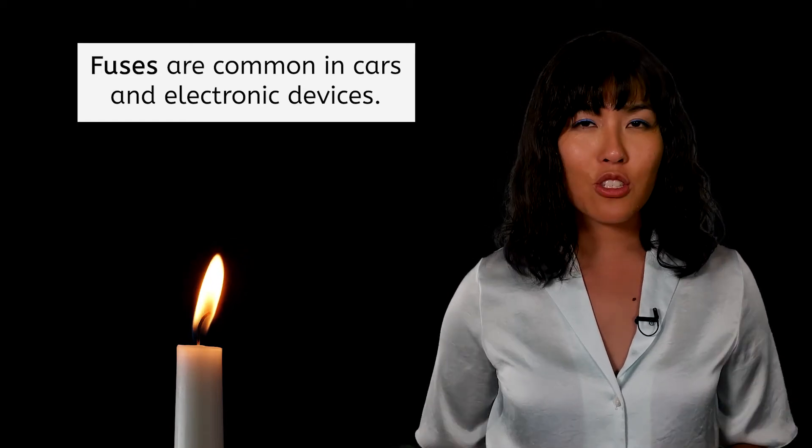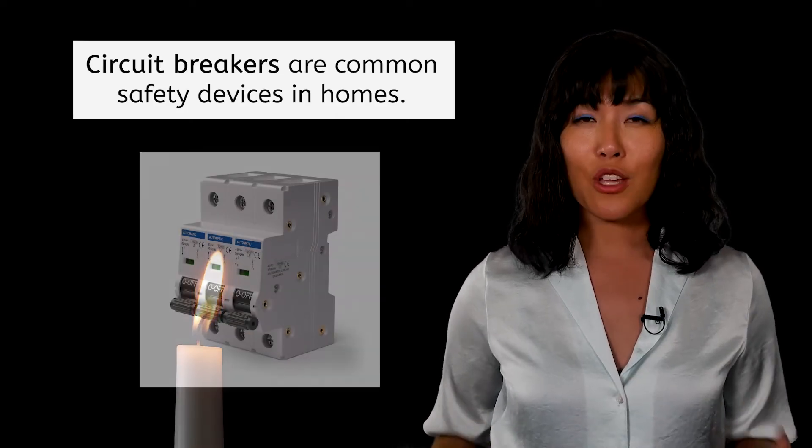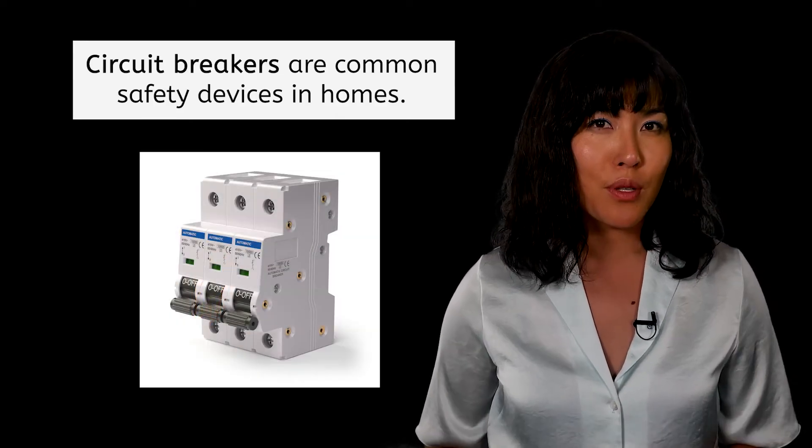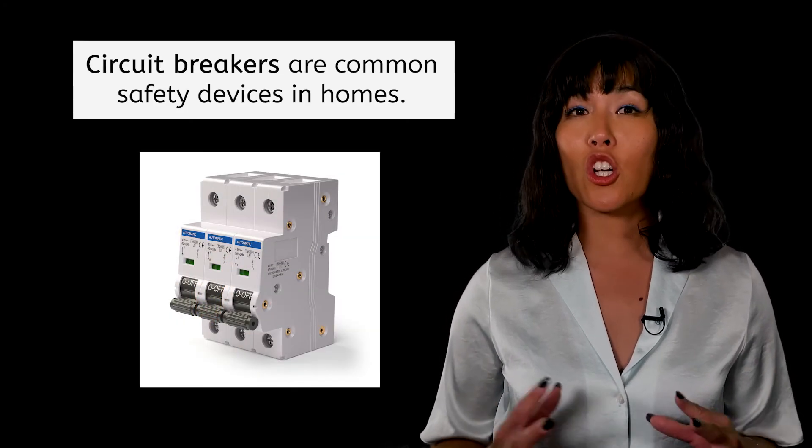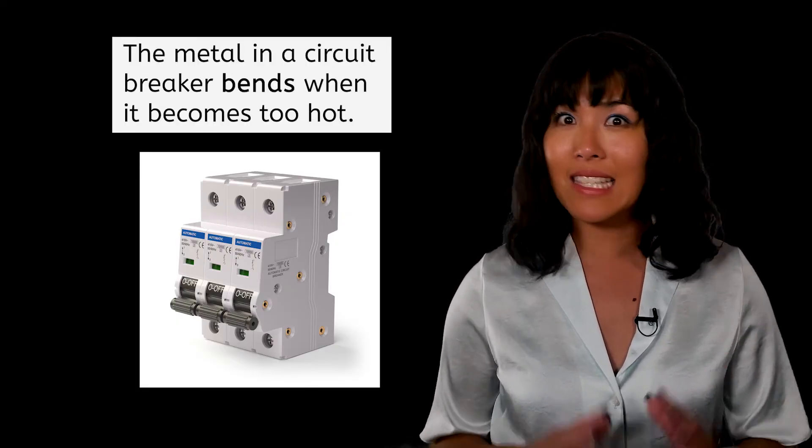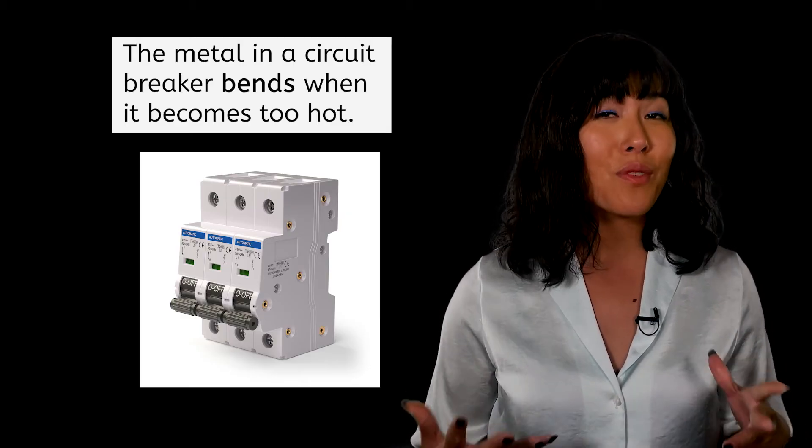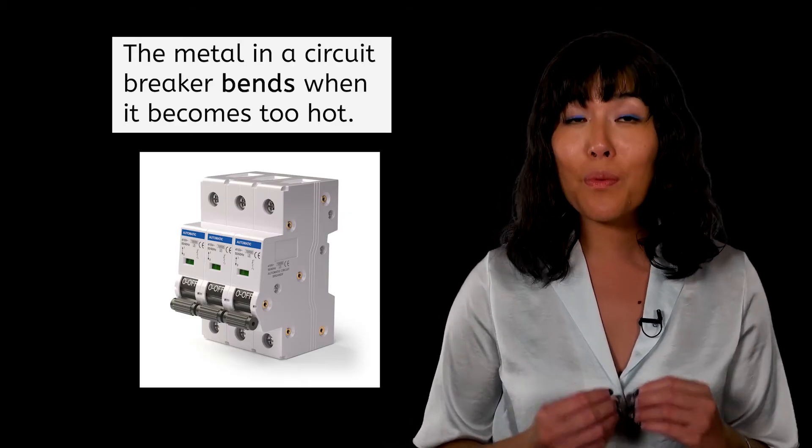To protect the circuit of a home, another safety device, a circuit breaker, is more common. Circuit breakers work by the same principle as a fuse, except that when the current becomes too high, the metal only bends instead of melting. This allows circuit breakers to be easily reset instead of needing to replace them.